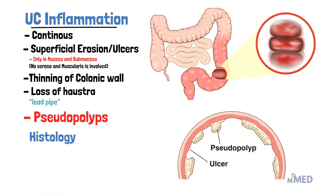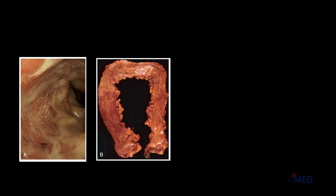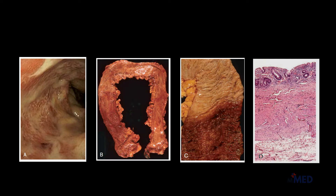On histology, we can see mucosal edema, congestion, inflammatory infiltrates, and crypt abscesses. Figure A shows an endoscopic view of severe ulcerative colitis with ulceration. Figure B shows a complete colectomy with active disease and red granular mucosa in the sigmoid curve. Figure C shows a sharp demarcation between active ulcerative colitis at the bottom and normal mucosa at the top. Figure D is a full-thickness histologic section showing that ulcerative colitis is limited to the mucosa only.